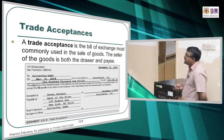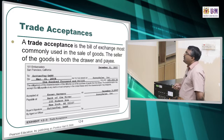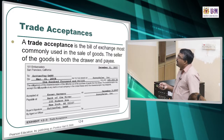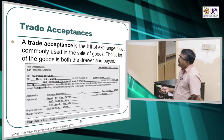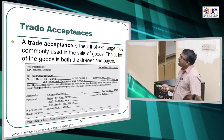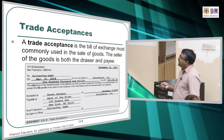A trade acceptance is a bill of exchange most commonly used in the sales of goods, where the seller of the goods is both the drawer and the payee. In this case, you want to pay to the same person — similar to how we can write a check payable to ourselves. A trade acceptance has similar details: date, time, location, name, and value.